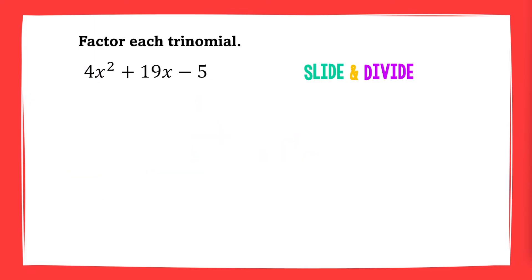Let's try this one. First, slide the 4 to the back and multiply it with the constant term. We get x squared plus 19x minus 20.